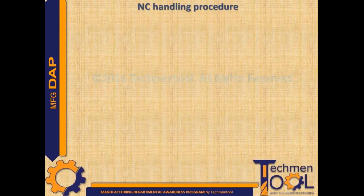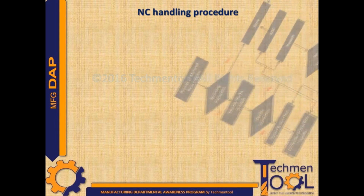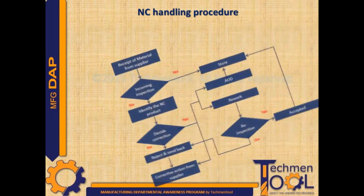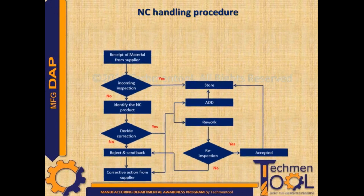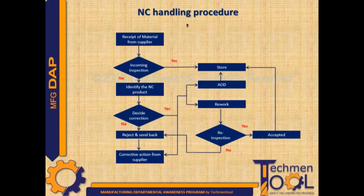This is the detailed NC handling procedure at the incoming inspection stage. After receipt of material from the supplier, it goes directly to the incoming inspection process. After inspection, if it is found okay, it goes directly to store. If it is not okay, it is identified as an NC product and a correction decision is made. There are two types of decisions: accepted under deviation or rework. If accepted under deviation, the material goes directly to the store.